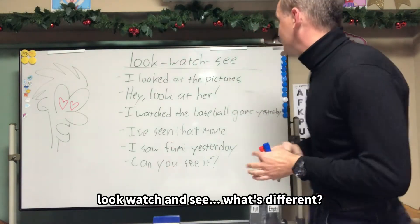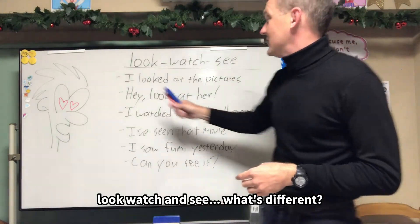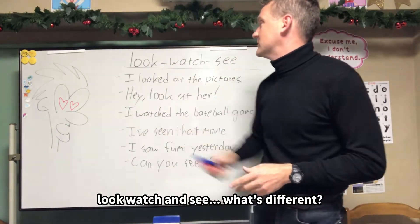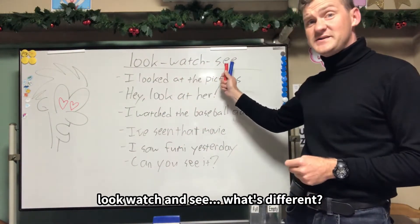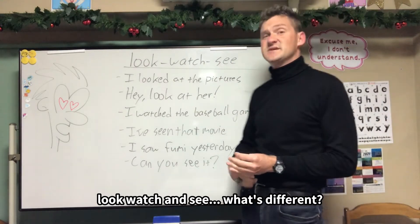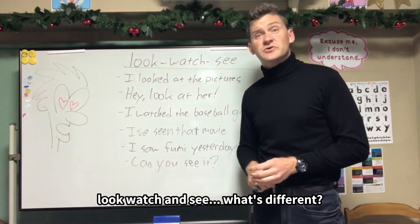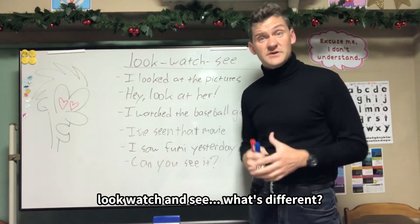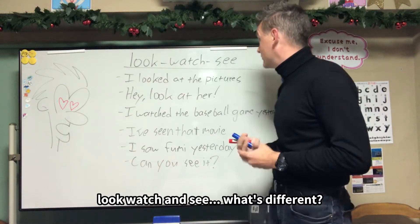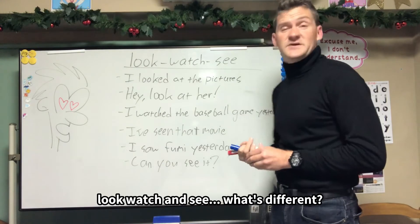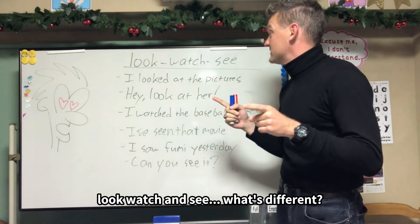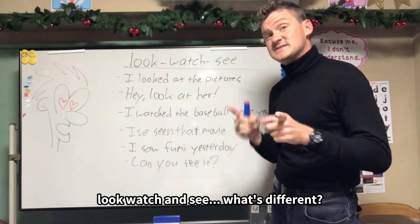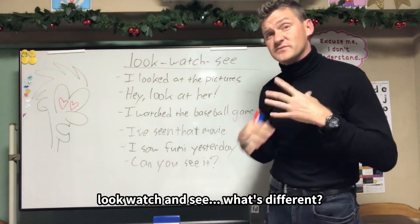So, look, watch, and see. Look, watch, and see — it's a little confusing, especially between Japanese and English, right? So let's check out these verbs and see what's different.